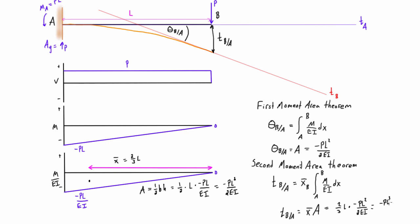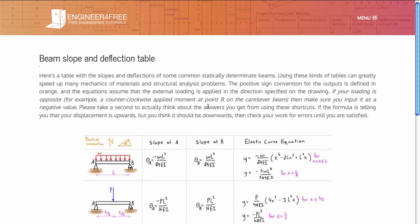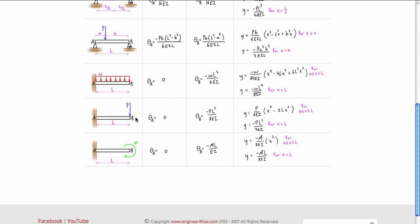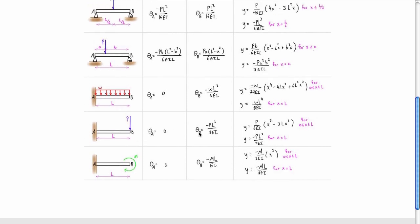Combining those gives negative PL cubed over 3EI. Theta_BA is negative, meaning the angle comes down from horizontal, which matches what we see in the deflected shape. The tangential deviation is also negative PL cubed over 3EI, and as established, this equals the actual deflection. Checking against standard beam tables for a cantilever with a single point load at the free end: theta_B equals negative PL squared over 2EI and deflection equals negative PL cubed over 3EI — exactly what we got using the moment area method.